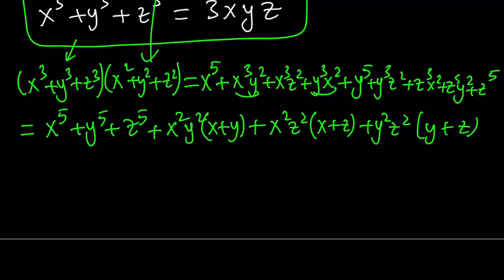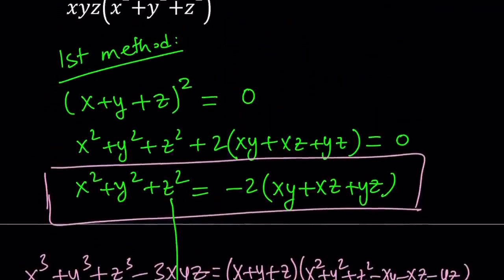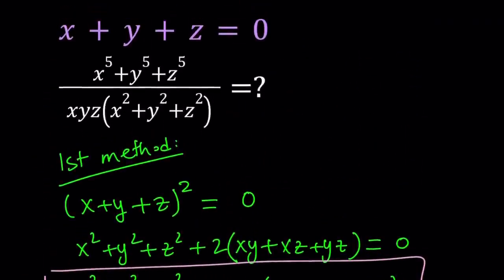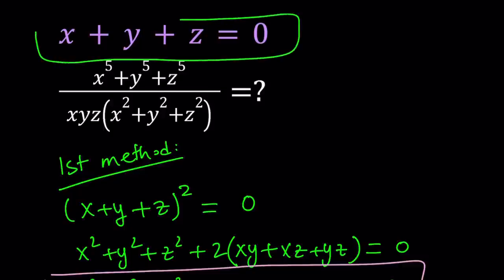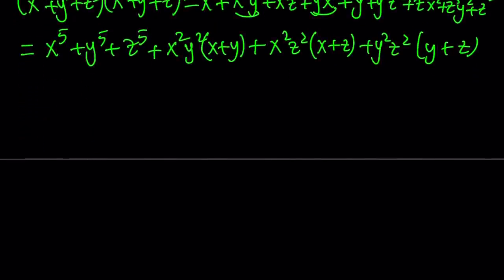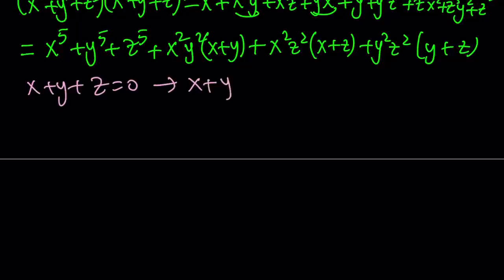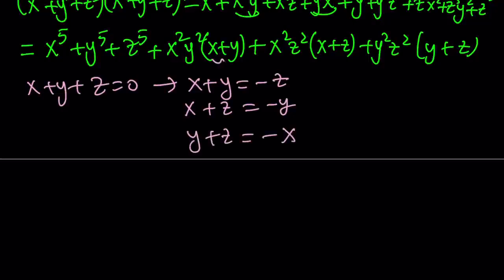This expression might look a little confusing because we got terms like x squared y squared multiplied by x plus y. But our identity is going to come to the rescue one more time. We know that x plus y plus z equals zero. So that's super important. If the sum is zero — x plus y plus z equals zero — this implies three things: x plus y can be written as negative z; x plus z as negative y; and y plus z as negative x. So let's do those replacements.